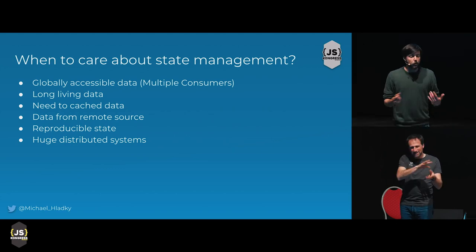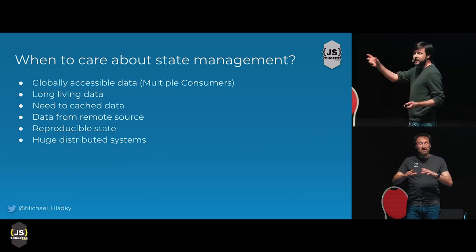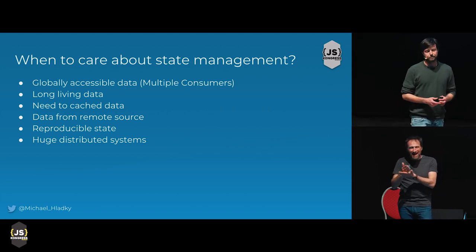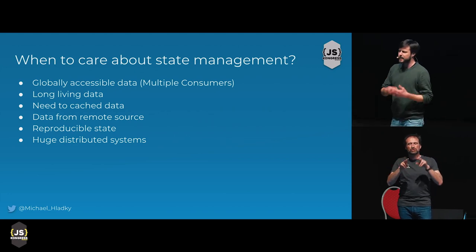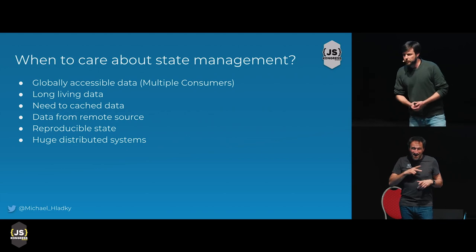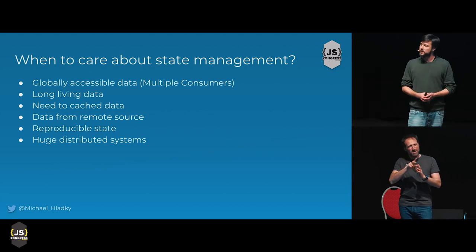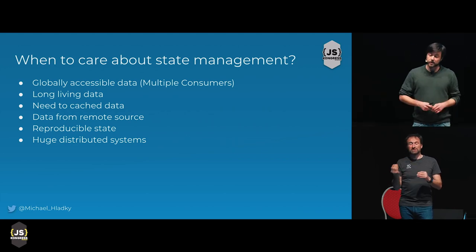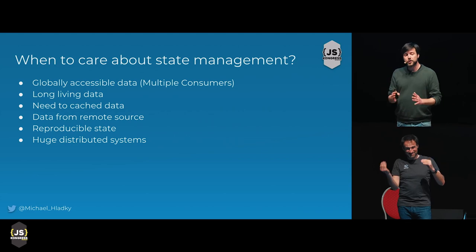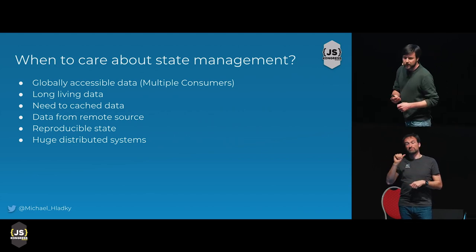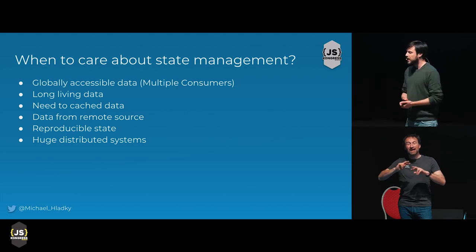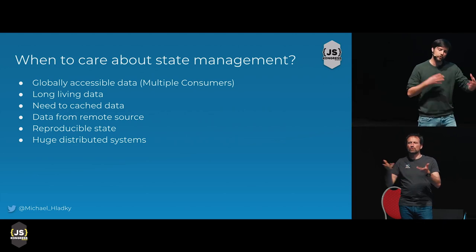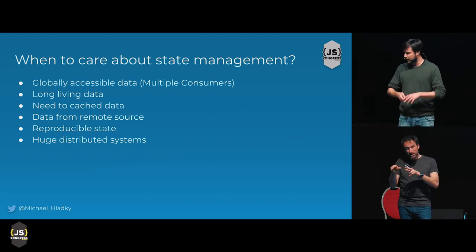Here are some bullet points that help you decide when you should introduce state management into your application and when not. First, you have globally accessible state, which means you have to share this state between different parts or components of your application. If you have long-living data stored for a long time in your application, you should also manage it in some way. If you need to introduce a caching layer, you can think about state management — especially if your state has to be reproducible. Also, if you have a huge distributed system, state management libraries help you organize it in bigger structures.